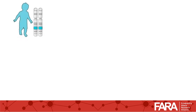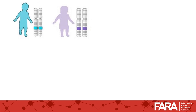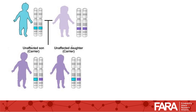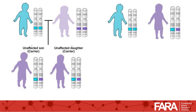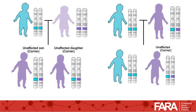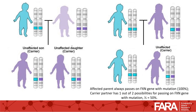What is the risk for someone who is affected with FA to have a child with FA? The answer depends on the carrier status of the person's partner. If the partner is not a carrier for FA, then all the children will be carriers for FA but not affected. If the partner is a carrier for FA, then there is a 50% chance that a child will be affected with FA. Here is the math: the parent affected with FA always passes on a frataxin gene with a mutation. The carrier partner has one out of two possibilities of passing on the frataxin gene with the mutation, thus yielding the 50% risk.